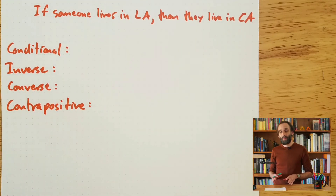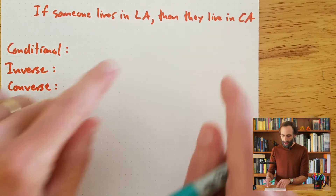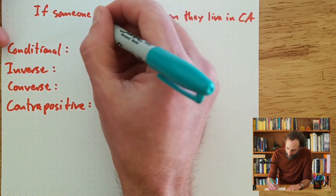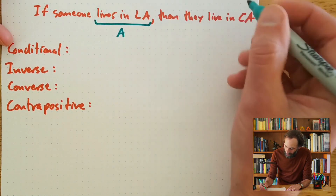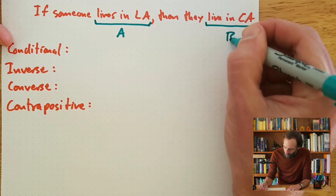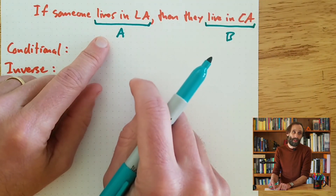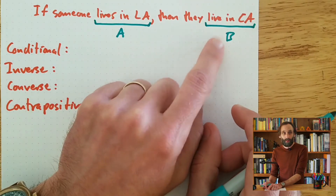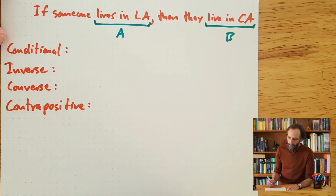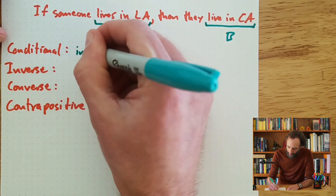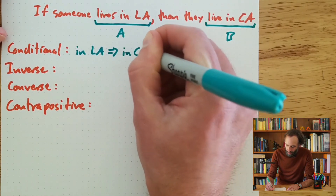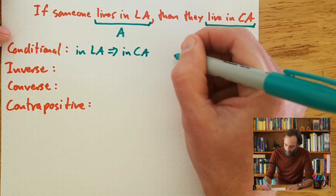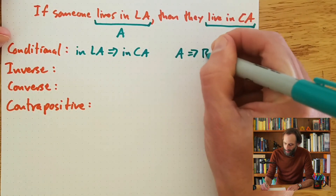For our second example, I'm going to use that other conditional I showed you earlier: if someone lives in LA, then they live in California. We'll label the parts again — A is living in LA and B is living in California. So the conditional is: if you're in LA, it implies that you're in California. Symbolically, A implies B.